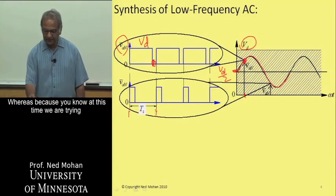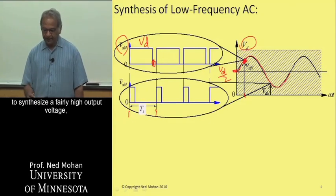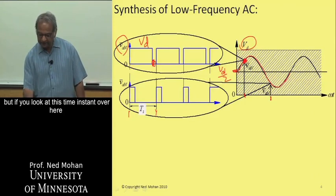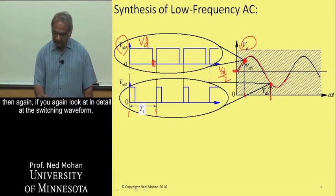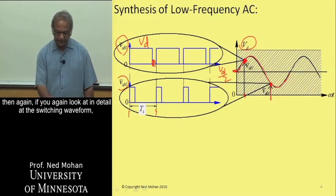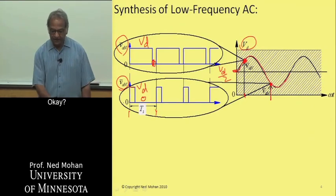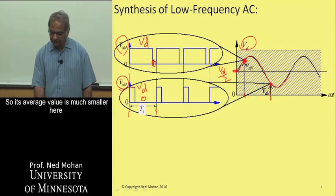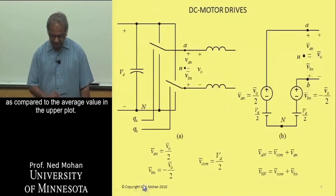Whereas at this time, we are trying to synthesize a fairly high output voltage. But if you look at this time instant over here, where the voltage is only this much, then if you again look in detail at the switching waveform, you will see that this voltage is high only for a small period of time, but for a large period of time it's zero, where its average value is much smaller here as compared to the average value in the upper plot.